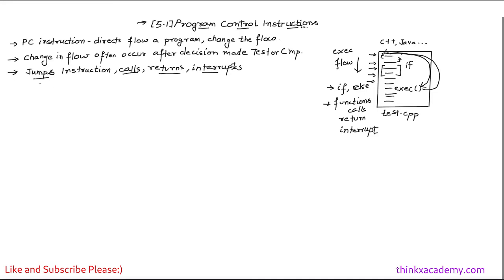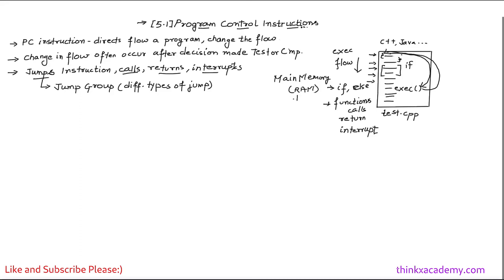The jump can be of different types, and that's why we have a whole jump group. We call it a jump group because it contains all the different types of jumps we can perform inside a program or instruction set. When executing instructions, they get stored inside main memory, which is essentially RAM. In microprocessors we have studied that main memory is divided into various segments — data segment, extra segment, code segment, tag segment. We will study how jump statements can move the flow from one segment to another when we study different types of jump groups.